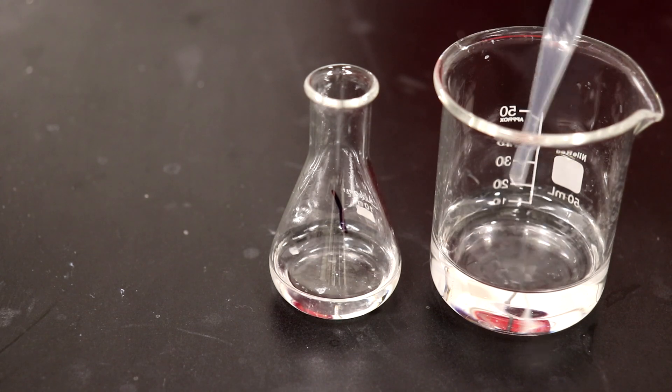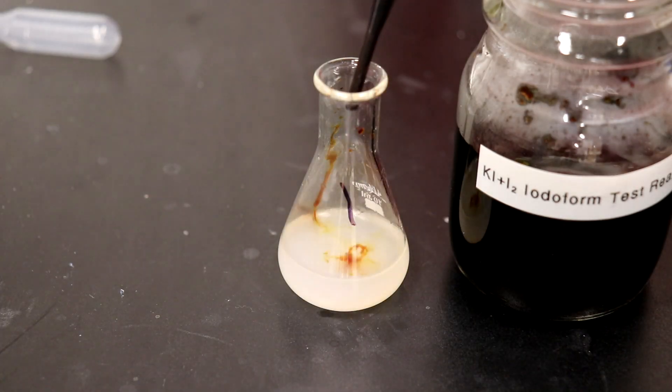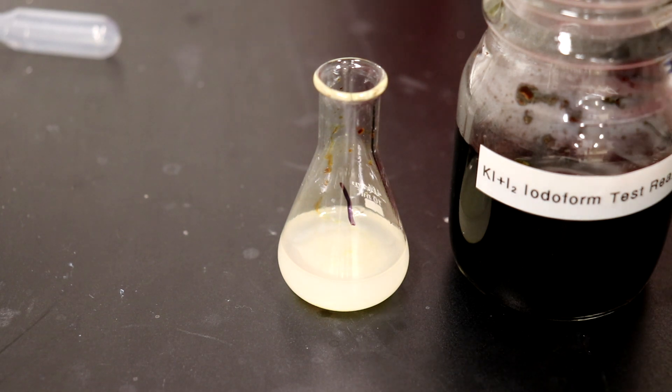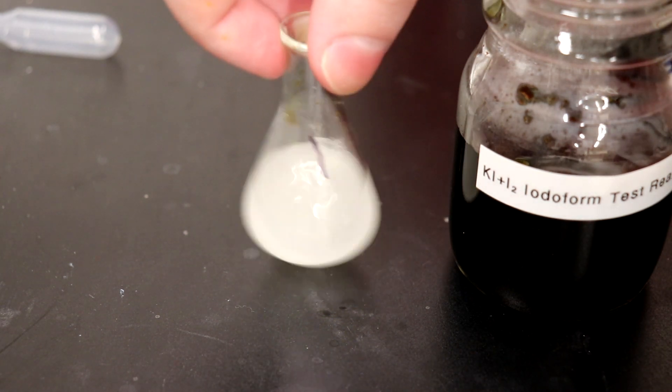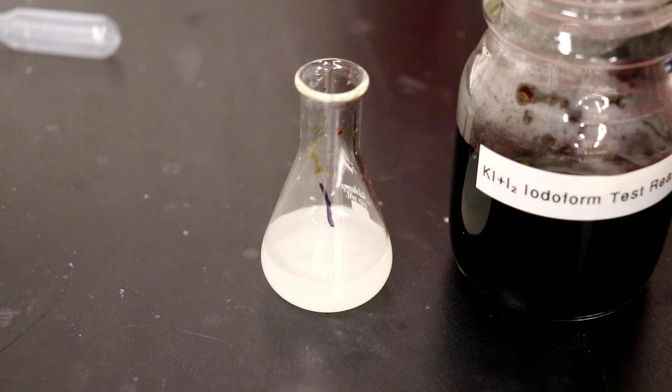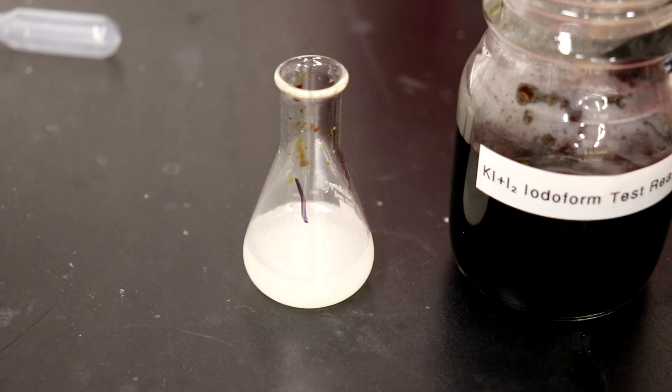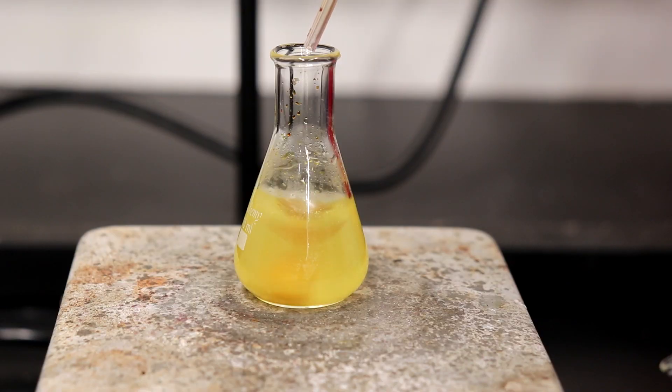Then 100 mg of the sample was measured out and dissolved in a mixture of 2 ml of water with 1.5 ml of dioxane. 2 ml of 5% sodium hydroxide solution was then added, and the testing reagent was added dropwise until it maintained a dark coloration of iodine for 2-3 minutes.